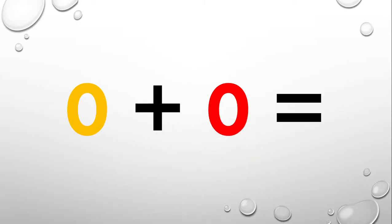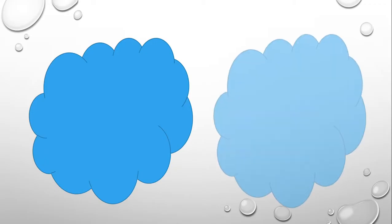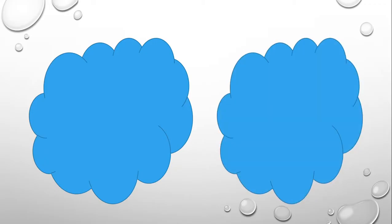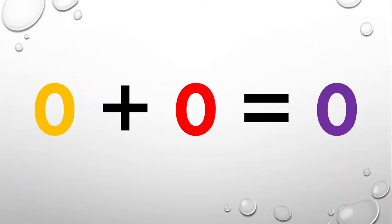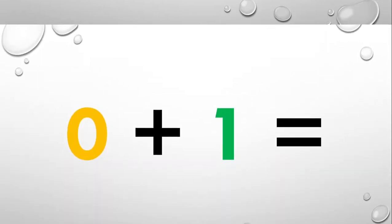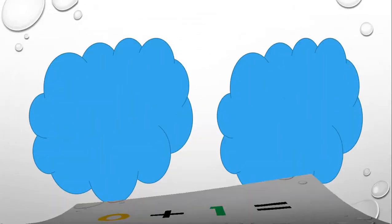Do you know what zero plus zero equals? Well, let's find out. We have zero stars on the first cloud and also zero stars on the second cloud. Let's count how many stars there are — well, zero. So that means that zero plus zero equals zero.